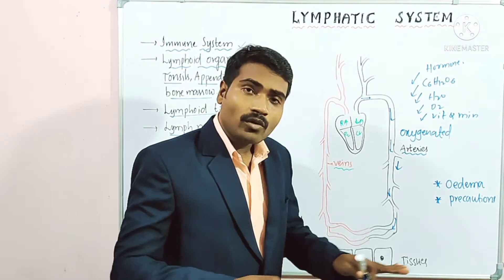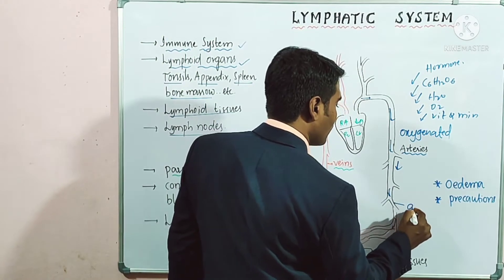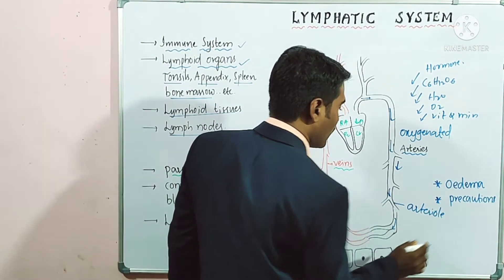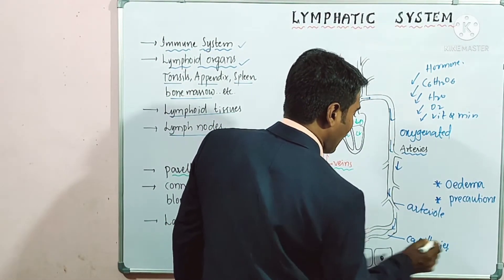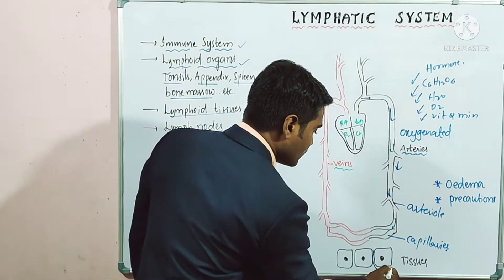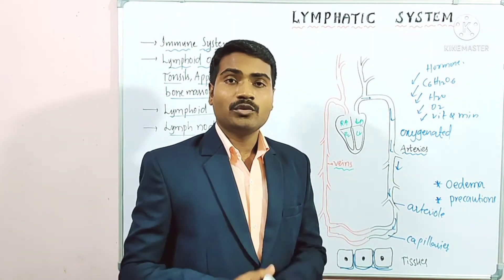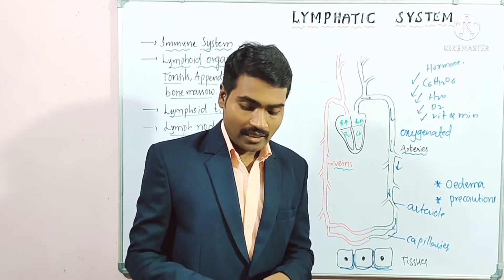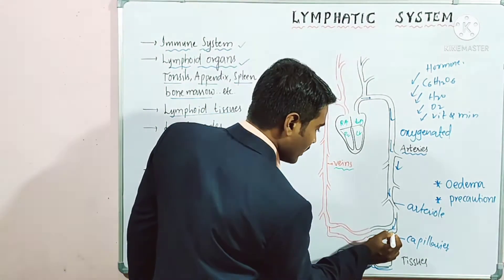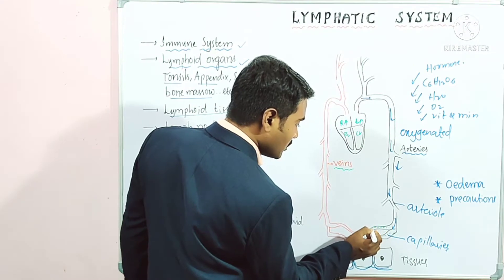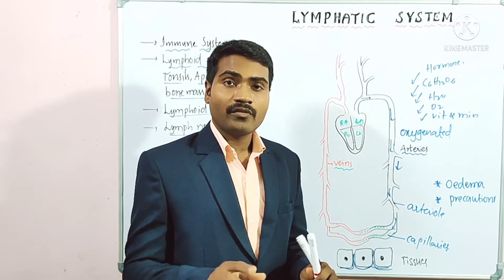Arteries further divide into capillaries. Because we have a closed type of circulatory system, blood circulates within the blood vessels — from arteries to arterioles to capillaries. Due to blood pressure, some fluid slowly leaks out from these capillaries.